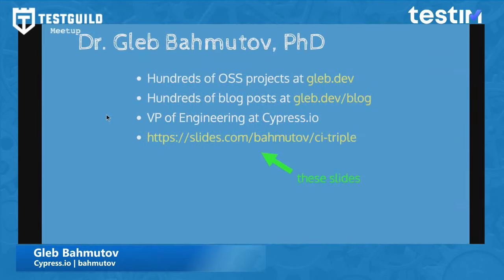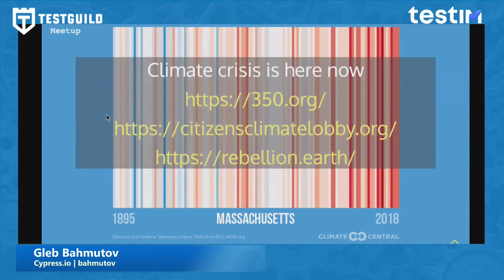A few words about myself. You can find pretty much everything I've done online on GitHub. These slides are on slides.com — I made them public. If you want to argue with me, I'm at Bakmakov on Twitter. I also want to give a shout out to a couple of organizations I'm a member of: 350.org, Citizen Climate Lobby, and Rebellion.org. Climate crisis is here — if you're not doing something about it, let me know.